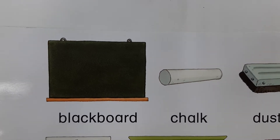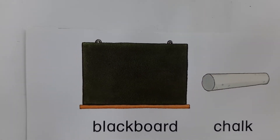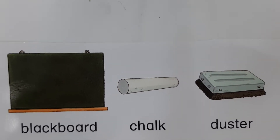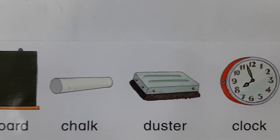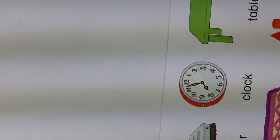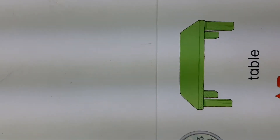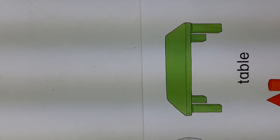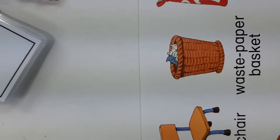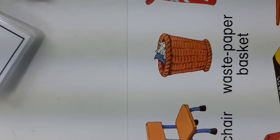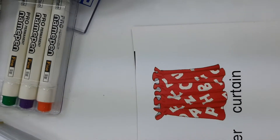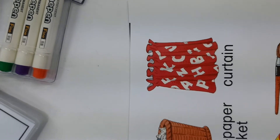Teacher, what is this? This is a blackboard. Teacher, what is this? This is a chalk. Teacher, what is this? This is a duster. Teacher, what is this? This is a clock. This is a table. This is a chair. This is a waste paper basket. This is a curtain.